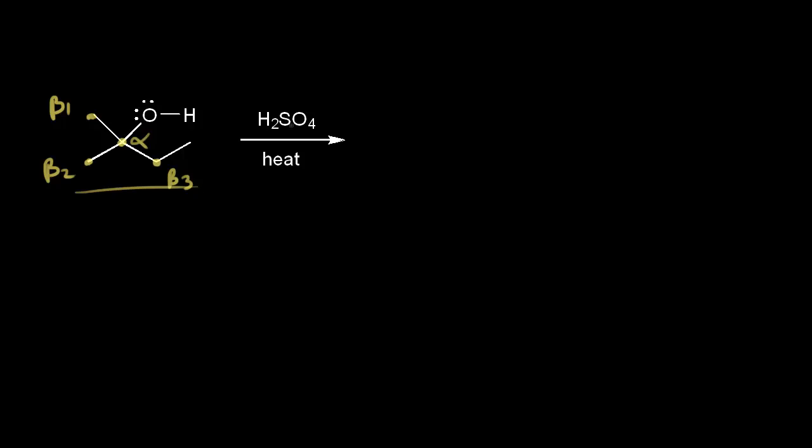If you react a tertiary alcohol with sulfuric acid and heat up your reaction mixture, this is going to be an E1 mechanism. We'll talk about the regiochemistry for this reaction and why this is a regioselective reaction in a few minutes. First, let's go through the mechanism.